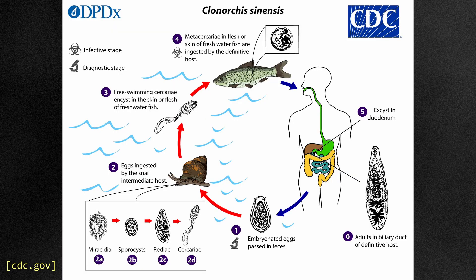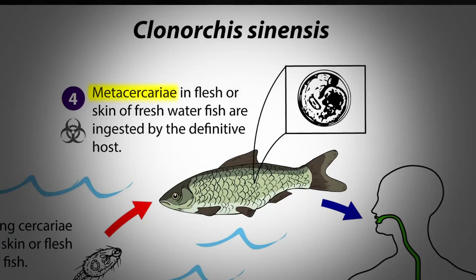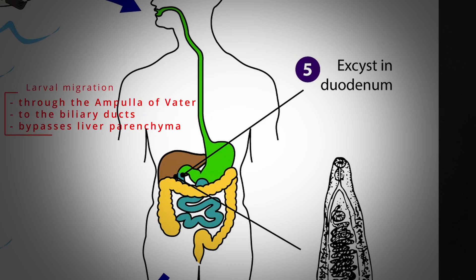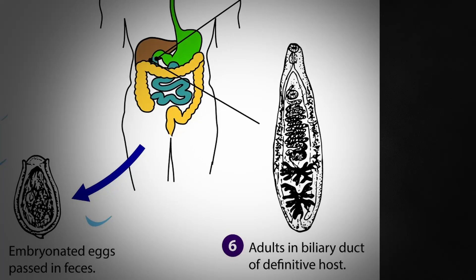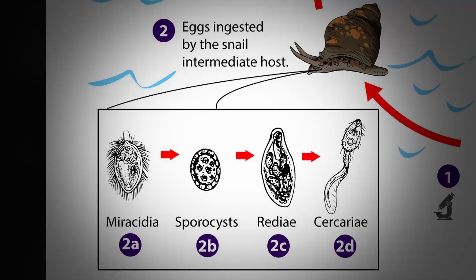The life cycle of Clonorchis sinensis and Opisthorchis vivarini is very similar and involves two important intermediate hosts. The infection begins when humans ingest the infective stage, the metacercariae, through the consumption of contaminated freshwater fish. Carps and minnows are the most common freshwater fish hosts. Once ingested, the metacercariae excyst in the duodenum and the larvae migrate through the biliary tract through the ampulla of Vater. Their migration bypasses the liver parenchyma and the worms fully mature within the biliary ducts. Once the adult flukes reach sexual maturity, they begin releasing embryonated eggs, which are passed through human stool. These embryonated eggs are ingested by the first intermediate host, the freshwater snail, usually of the genus Parafossarulus.